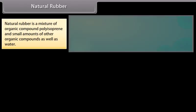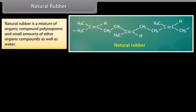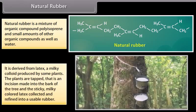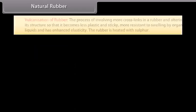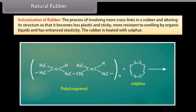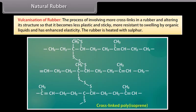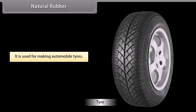Natural rubber is a mixture of the organic compound polyisoprene and small amounts of other organic compounds as well as water. It is derived from latex, a milky colloid produced by some plants. The plants are tapped — an incision made into the bark — and the sticky, milky colored latex is collected and refined into usable rubber. Vulcanization of rubber involves introducing more cross-links in rubber, altering its structure so that it becomes less plastic and sticky, more resistant to swelling by organic liquids, and has enhanced elasticity. The rubber is heated with sulphur and is used for making automobile tires.